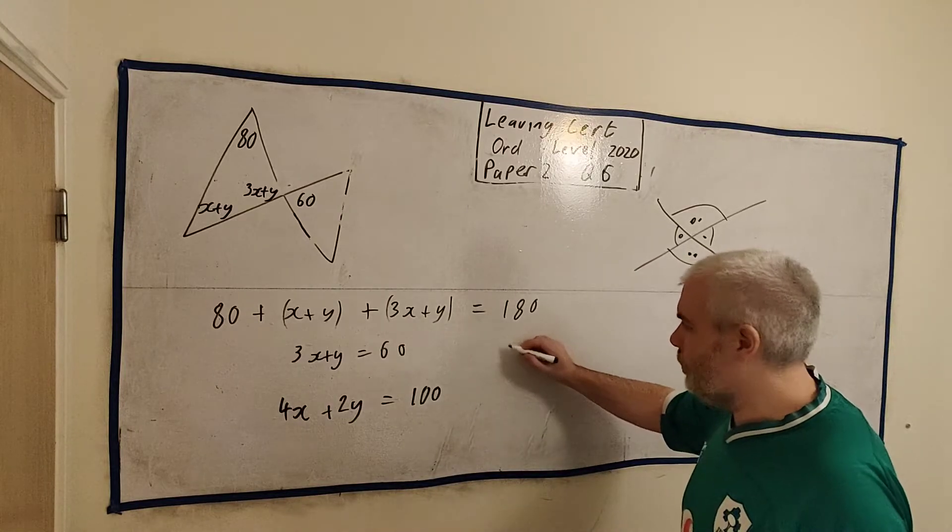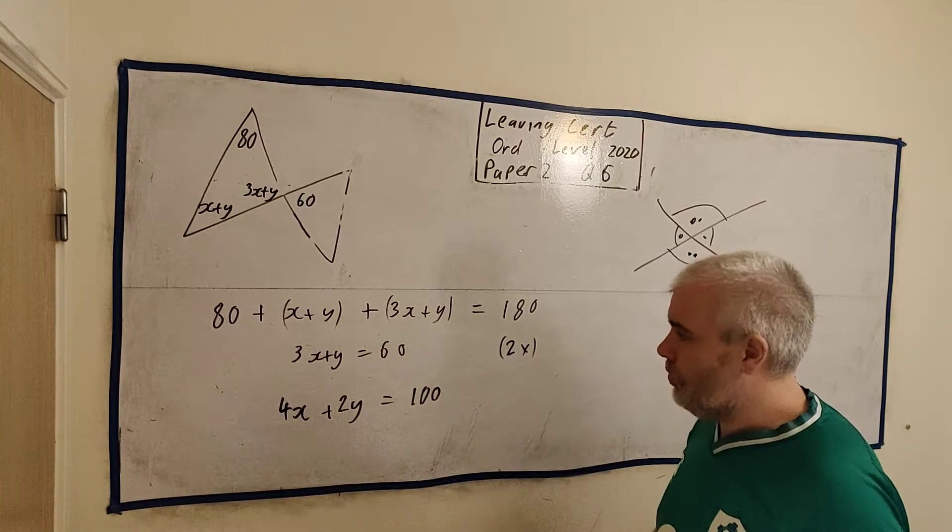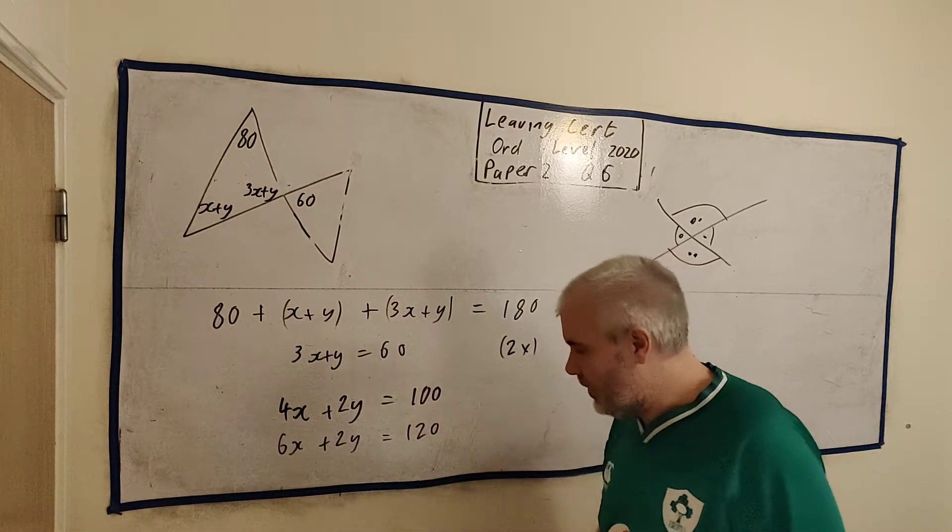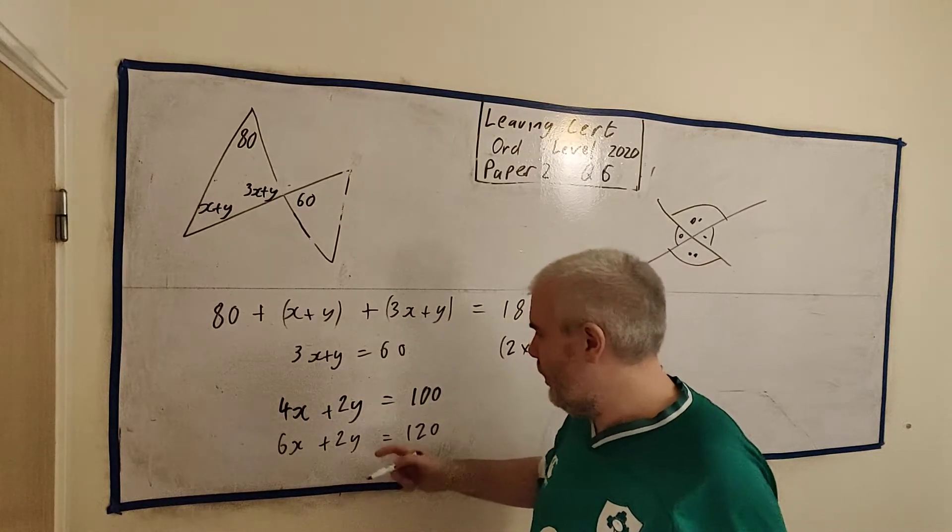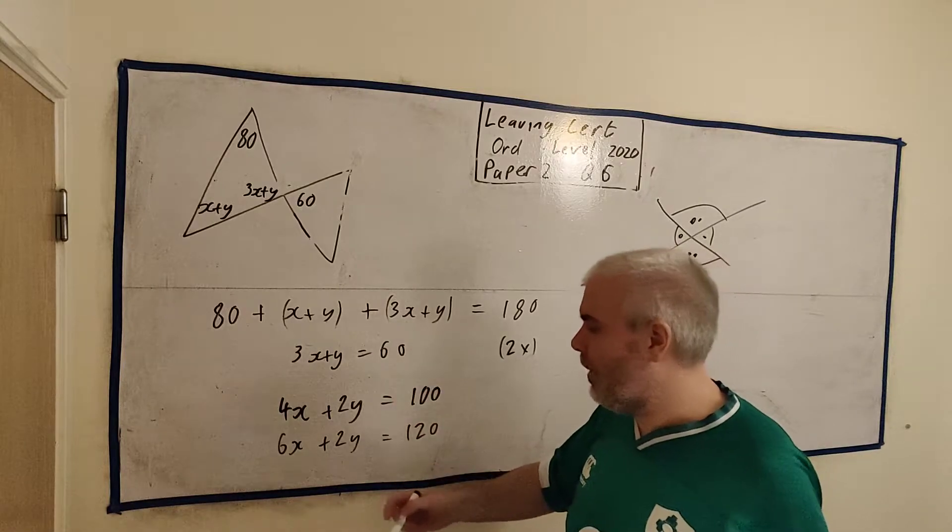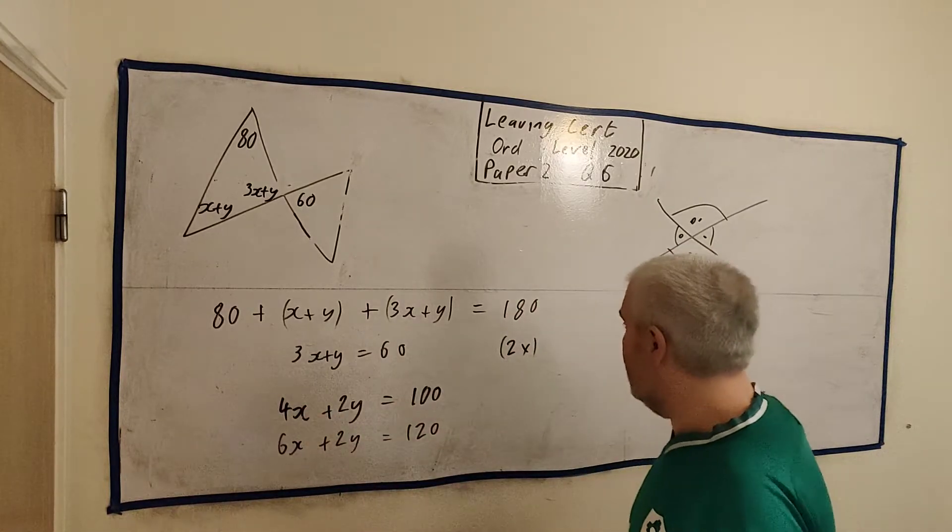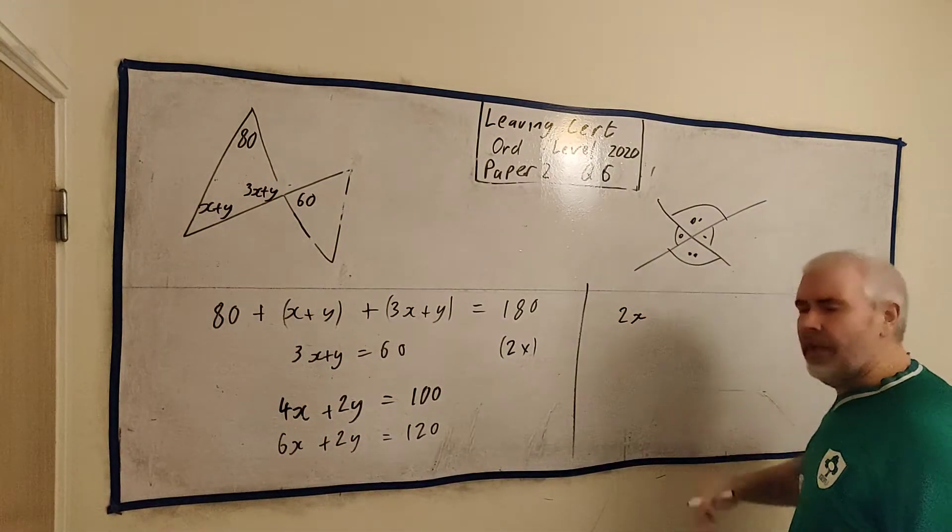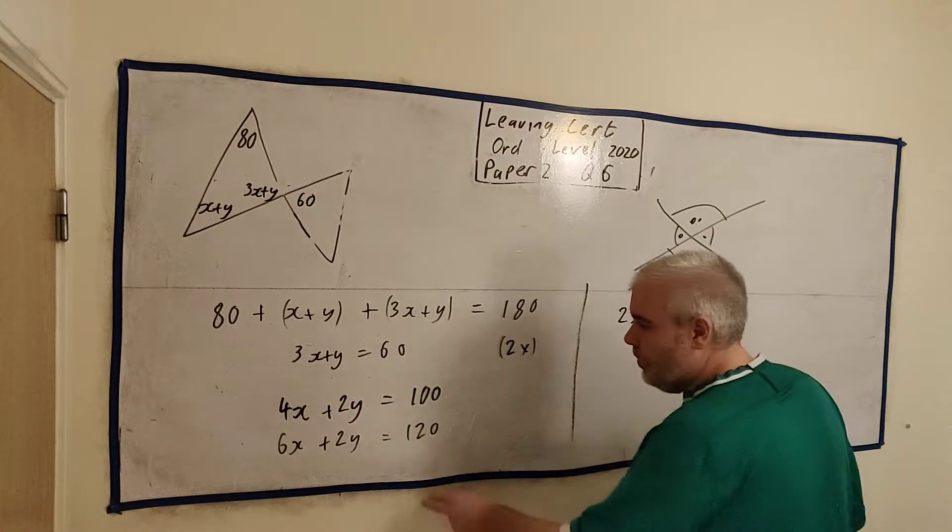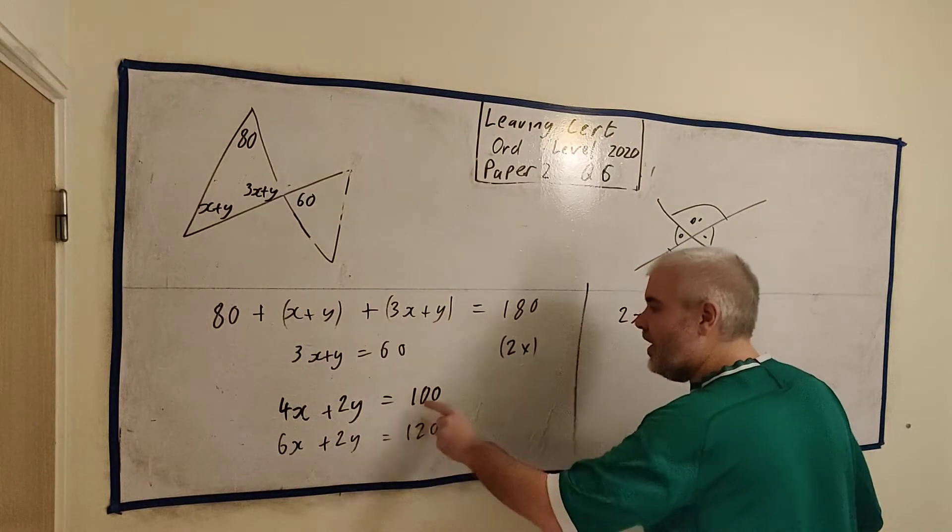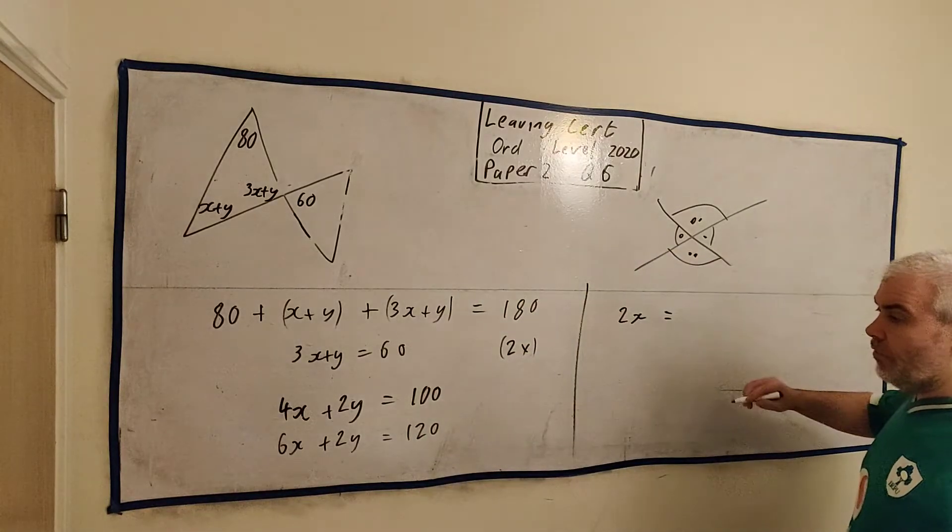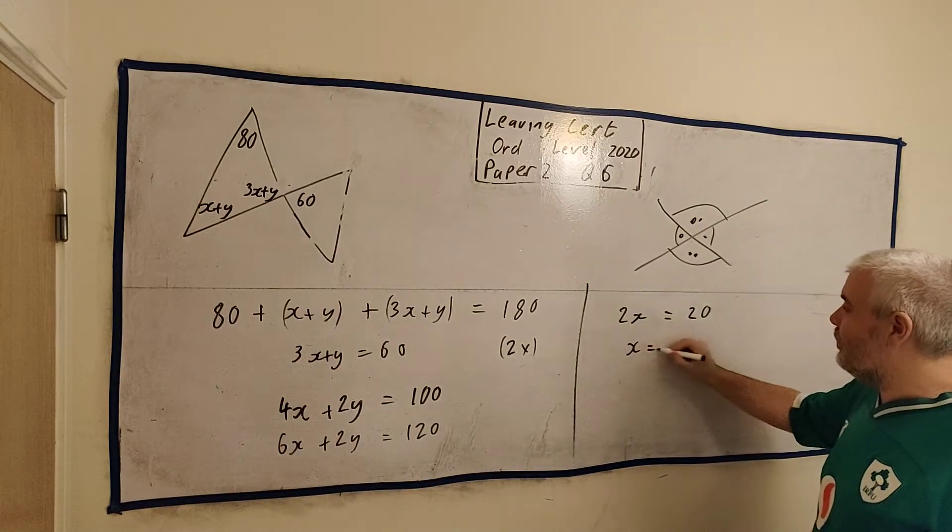There's multiple ways to do it, but probably what's common would be to take the top line and multiply it by 2. Let's multiply that by 2. We'd get 6X plus 2Y now equals 120. And now we can take them away from each other. That's to destroy these two numbers here. So let's take 6X minus 4X, just to leave a positive number. 6X, take away 4X, is 2X. 2Y minus 2Y is nothing. Equals, 120 take away 100. This number minus this number. 120 minus 100 is 20. That means X must equal 10.